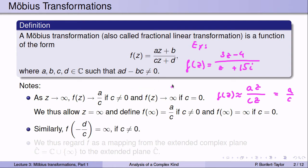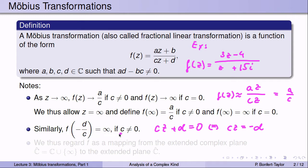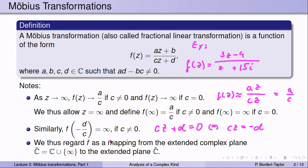We can do a similar thing for the point that gets mapped to infinity — the point z for which we divide by zero. That happens when cz + d = 0, i.e., z = -d/c. So we say f(-d/c) = ∞, as long as c ≠ 0. If c = 0, you can't make the denominator zero. We therefore regard Möbius transformations not only as mappings from ℂ, but as mappings defined on ℂ̂, the extended complex plane, mapping ℂ̂ to ℂ̂.